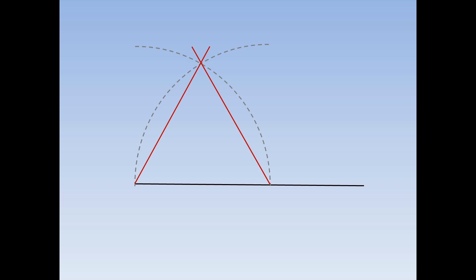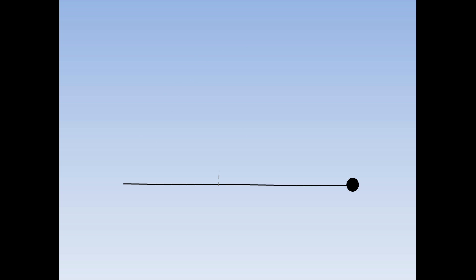This is an equilateral triangle. Here's a line. We're going to construct an equilateral triangle using just a compass and ruler. Take your compass and put the sharp end on the end of the line and draw a quarter circle. Then, keeping the compass exactly the same width, move the sharp end to the place where the quarter circle and line cross over and draw another quarter circle.